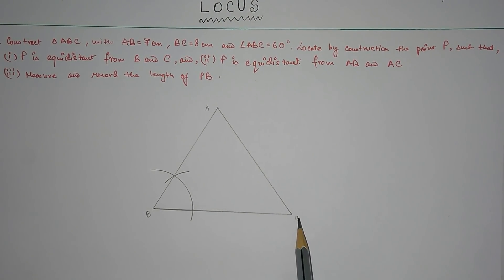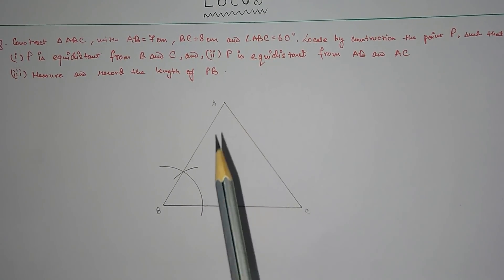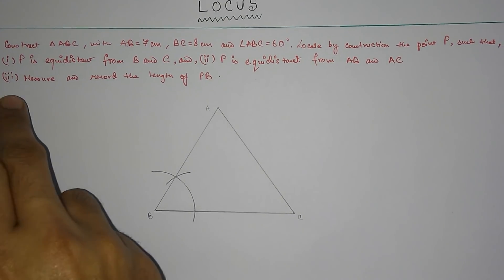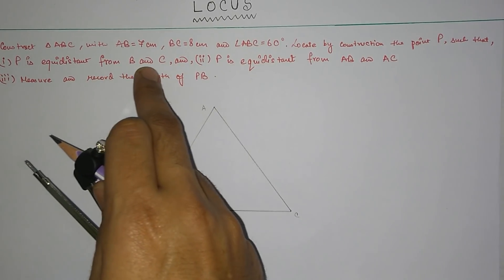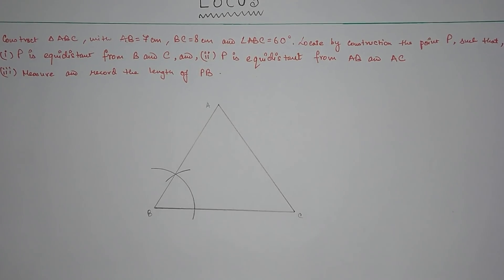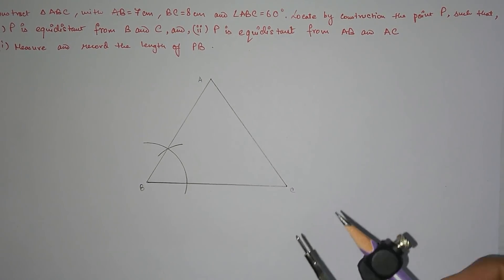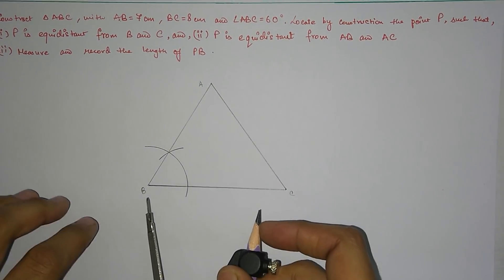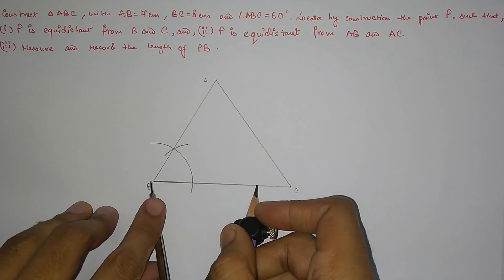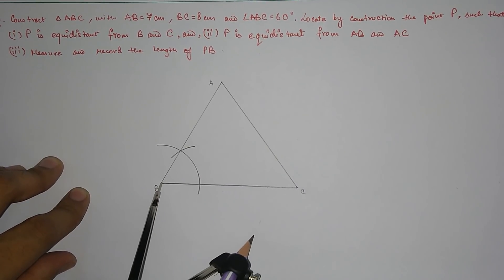BC is 8 cm, AB is 7 cm, and the angle as stated is 60 degrees. Now the first condition is P is equidistant from B and C. As told in the previous question, a point equidistant from two fixed points lies on the perpendicular bisector of the line joining them. So we take the compass to roughly half the length of BC, and construct the perpendicular bisector — making arcs from both B and C on both sides.